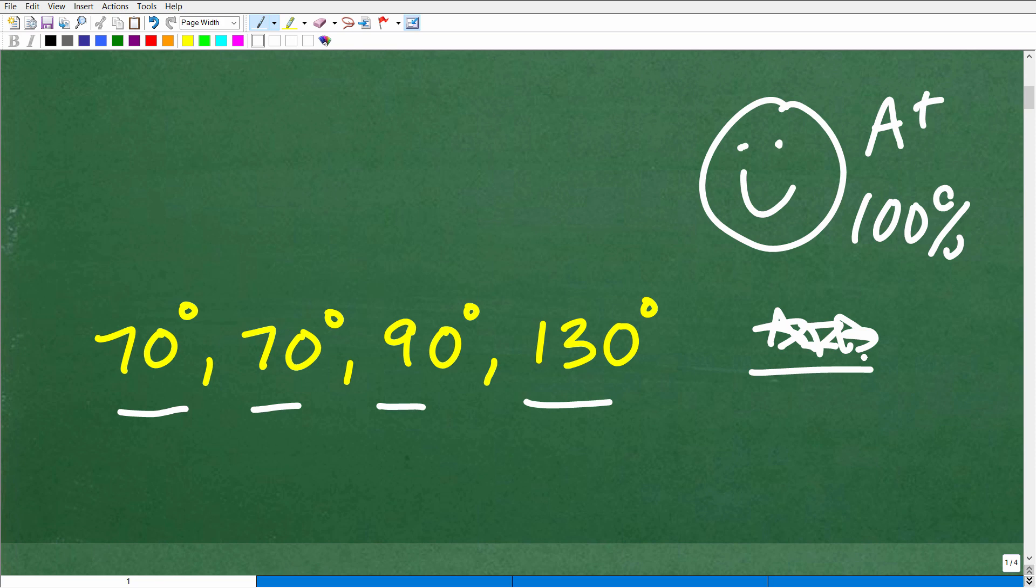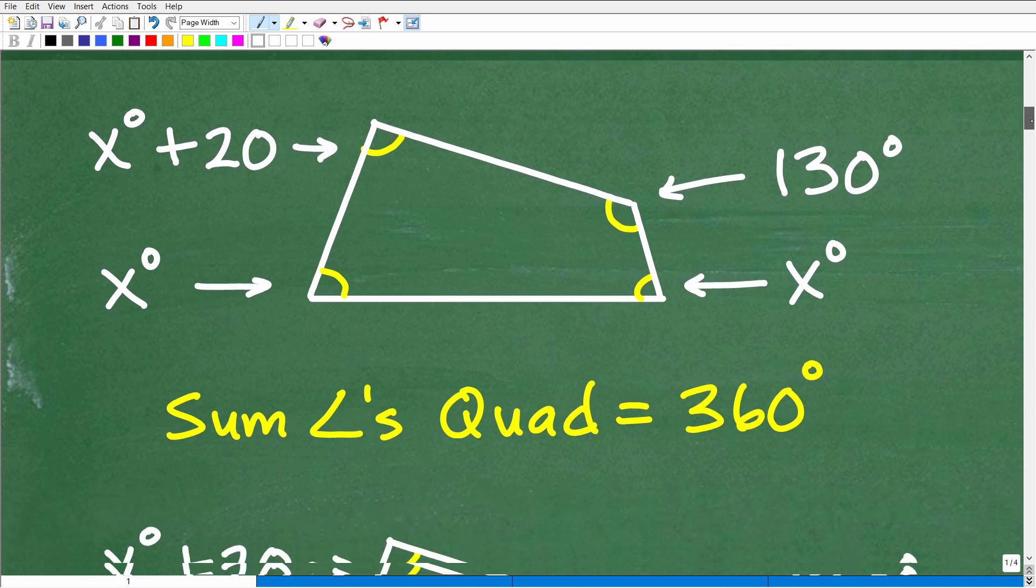Okay, so this is not that difficult. But the key to solving this problem is knowing that characteristic about quadrilaterals that I was talking about in the beginning of this video. And that characteristic is the following, that the sum of the angles of a quadrilateral is 360 degrees.